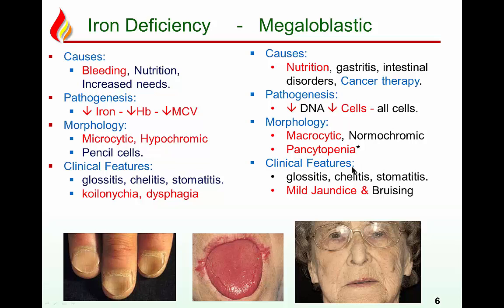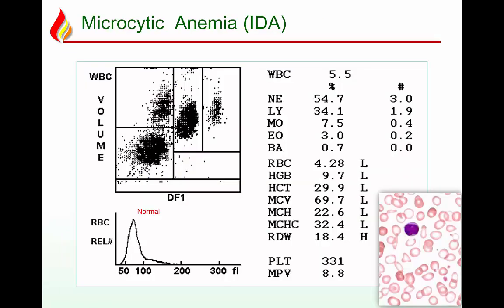Clinically, rapidly dividing epithelial cells are also affected, so patients have glossitis, chelitis, and stomatitis — inflammation of the tongue and oral cavity. In addition to anemia, megaloblastic anemia causes jaundice and bruising due to decreased platelets, giving bleeding tendencies. Large RBCs are broken down, producing an element of hemolysis.